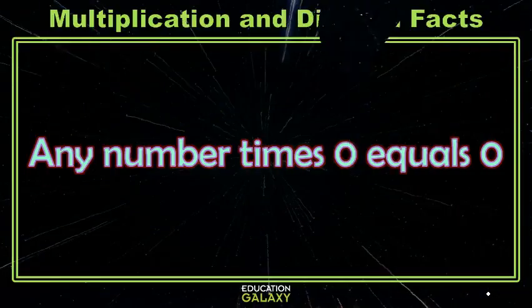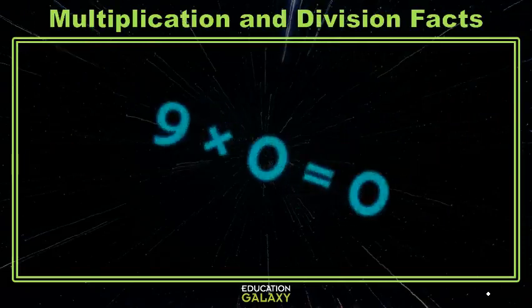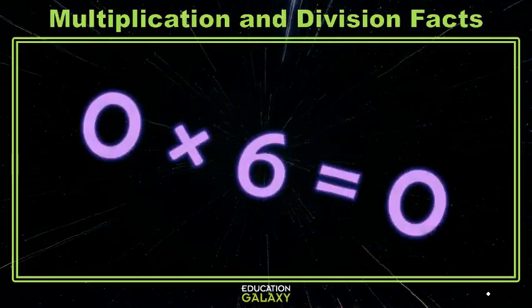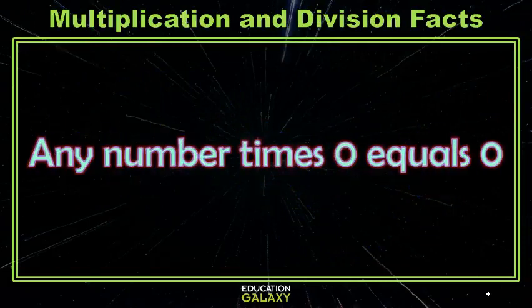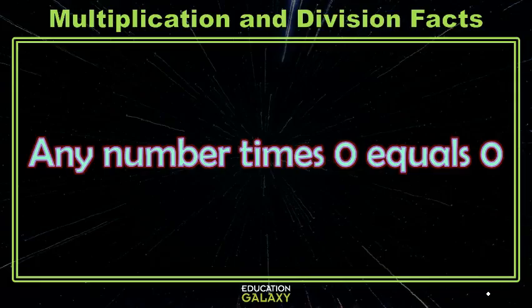Let's start by remembering that any number times 0 equals 0. 9 times 0 is 0, 0 times 6 is 0, and even 0 times 0 is 0 because any number times 0 equals 0. Great!